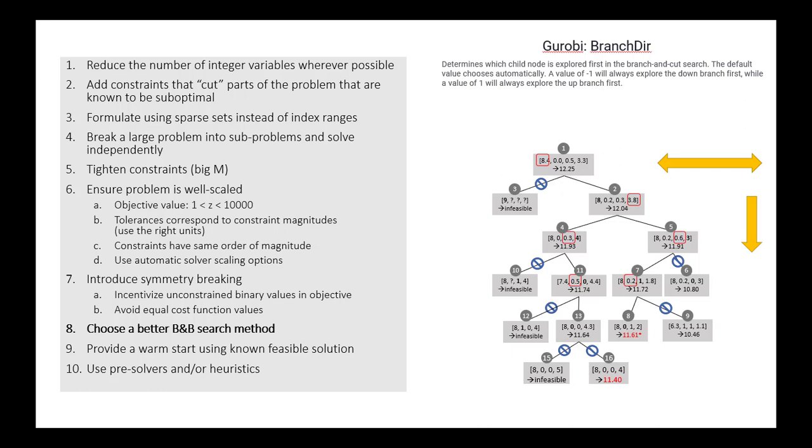So far, the list we've talked through has a lot to do with how we formulate the problem. As we're going through and formulating the problem, we need to make decisions that make the solver's life easier. The final three that we'll talk through are things that we can do with the solver itself to try to improve the problem solution speed.